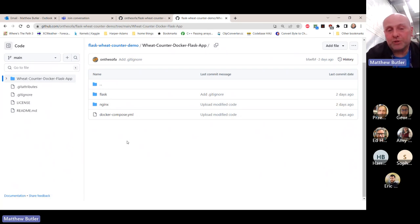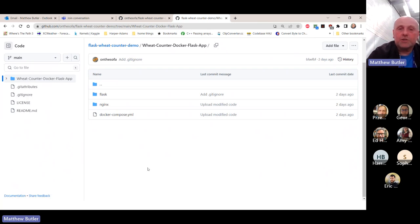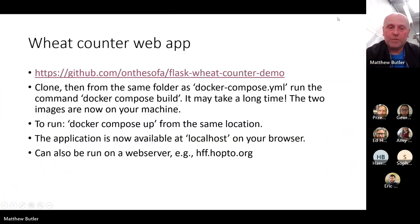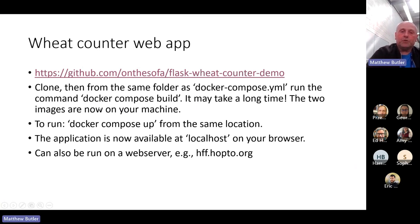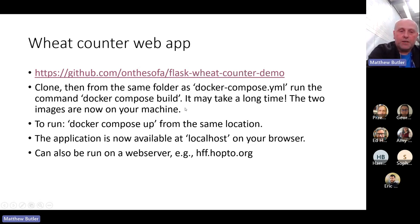Nginx is going to be a web server running on our machine that makes it available from the outside. So how does this work? You git-clone it to a folder and then run the Docker Compose command. I'll show you the folder where I did that.